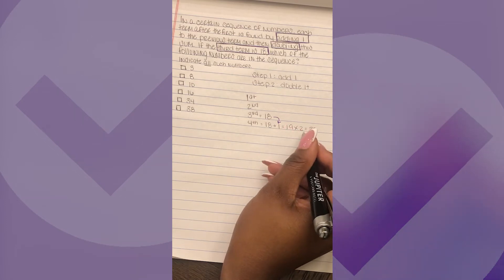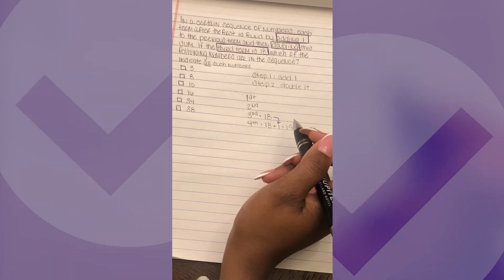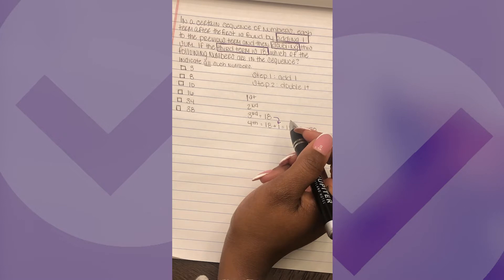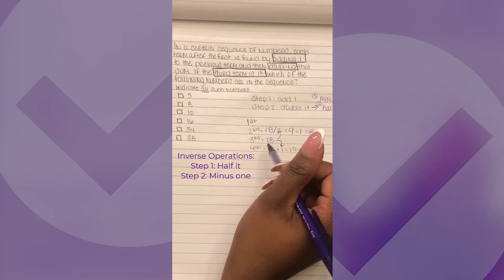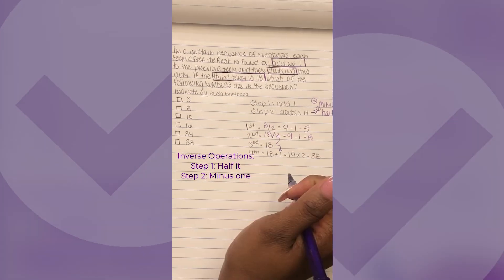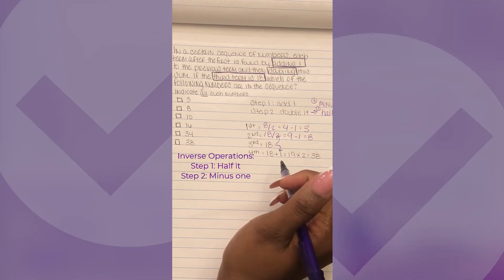To find the fourth term is easy: add one and double it. To find the second and first term we just got to do the same thing in reverse. So first we have it and then we subtract one, so the second term in our sequence is eight. Let's look into the first one. The first term in our sequence is three.